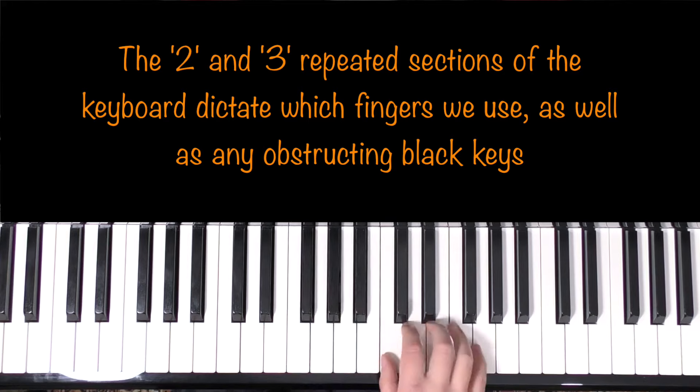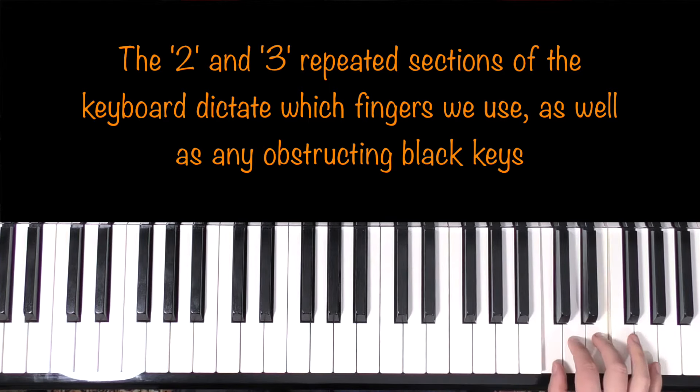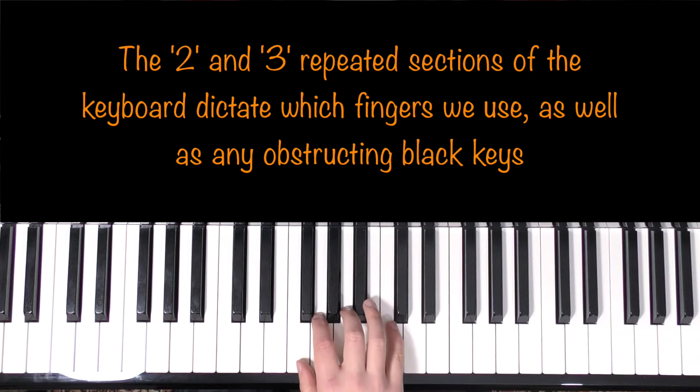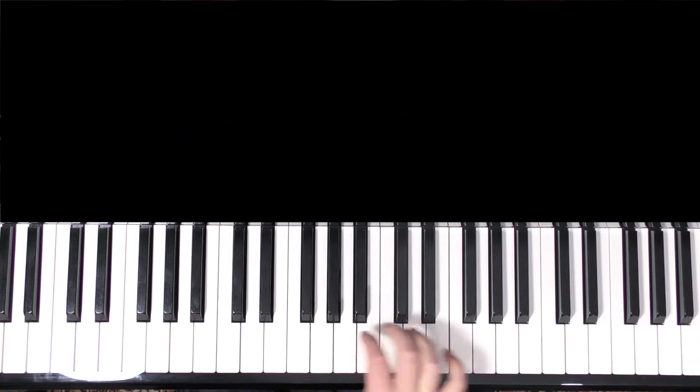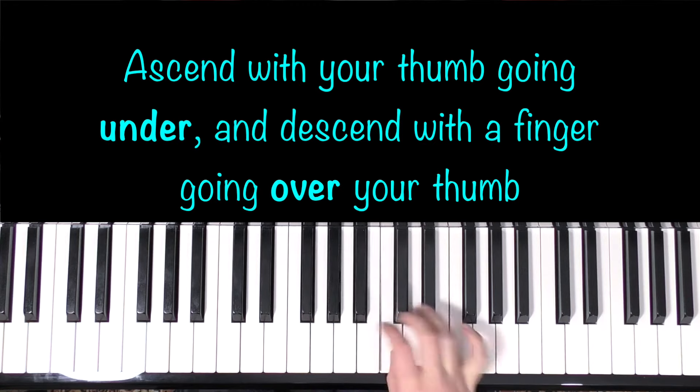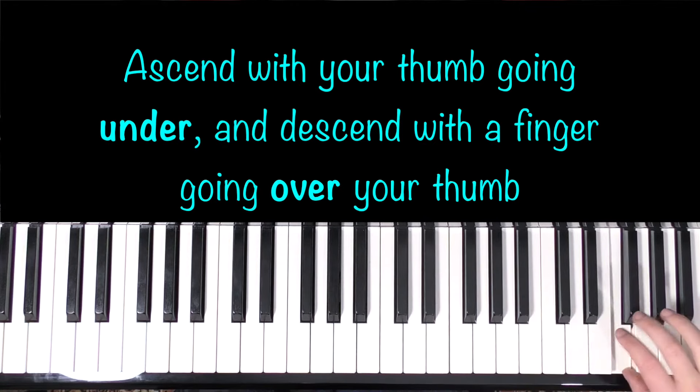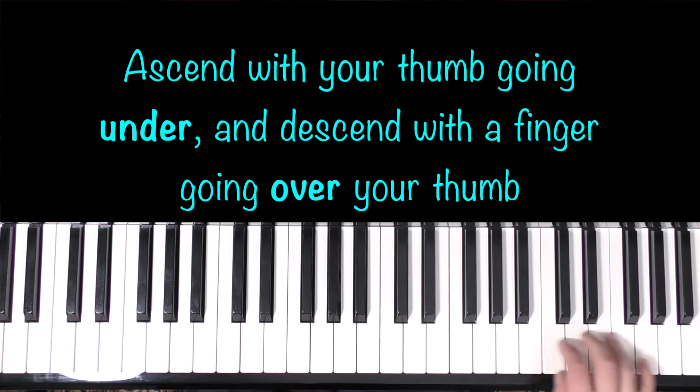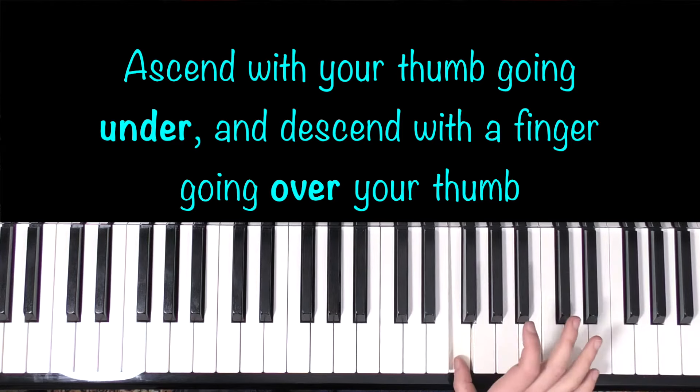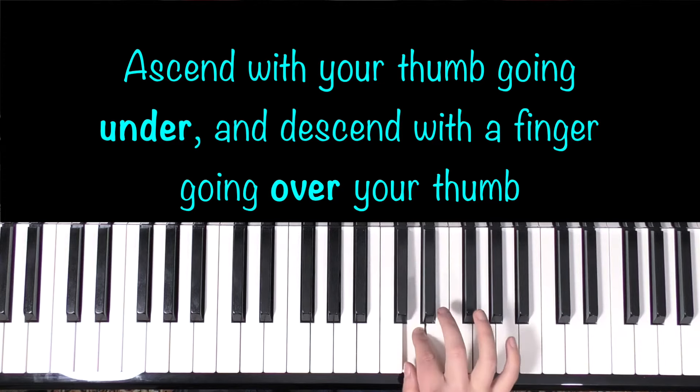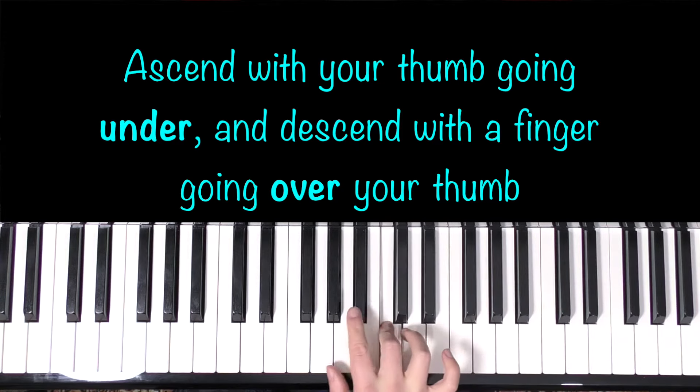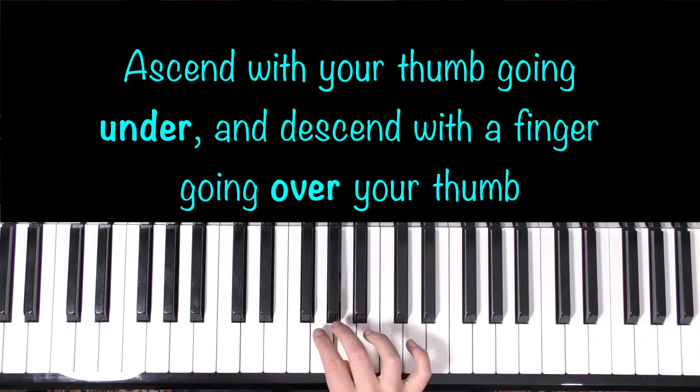So that's a wider section, smaller section. This is how we break the piano up, and this is kind of what dictates which fingers we use in scales generally. You'll always ascend going under with your thumb. And you'll always, coming down, go over with a finger, over your thumb. So to ascend you go over your thumb, over your thumb, not this, over with your thumb.